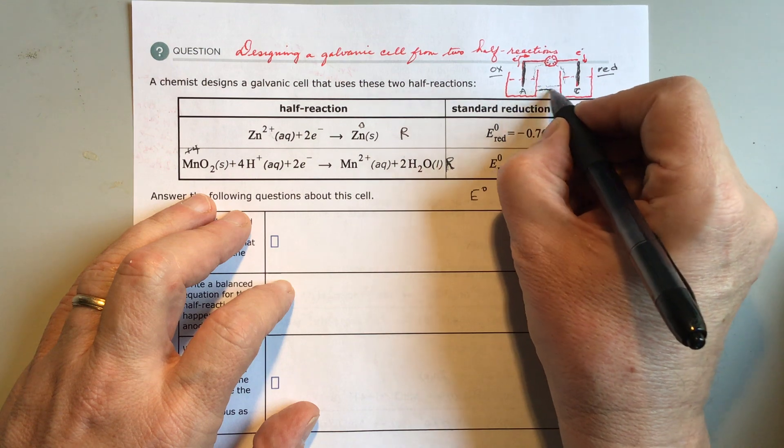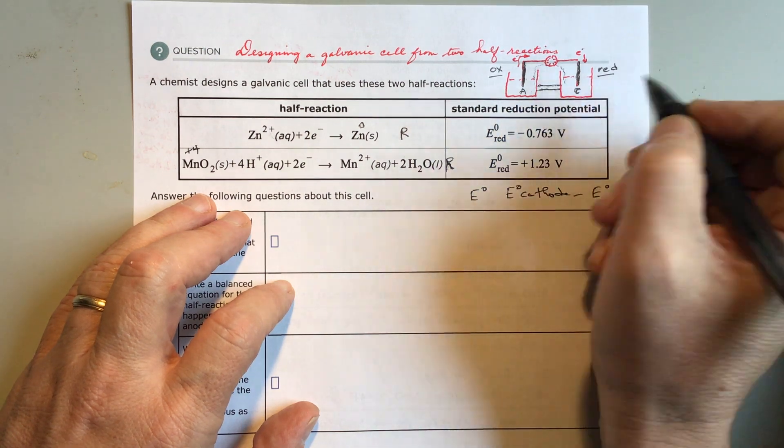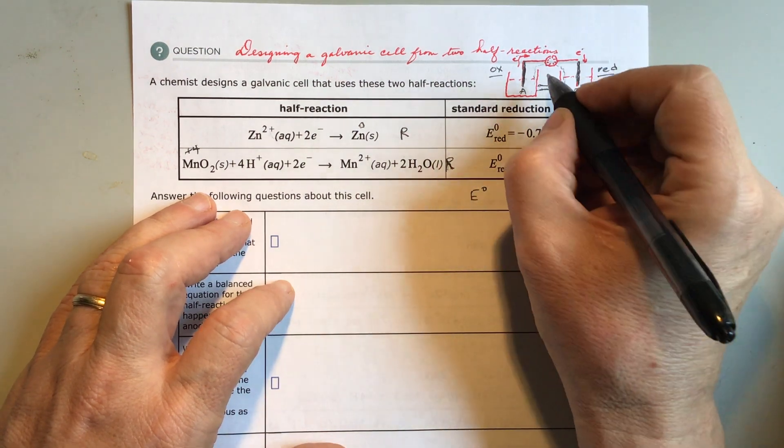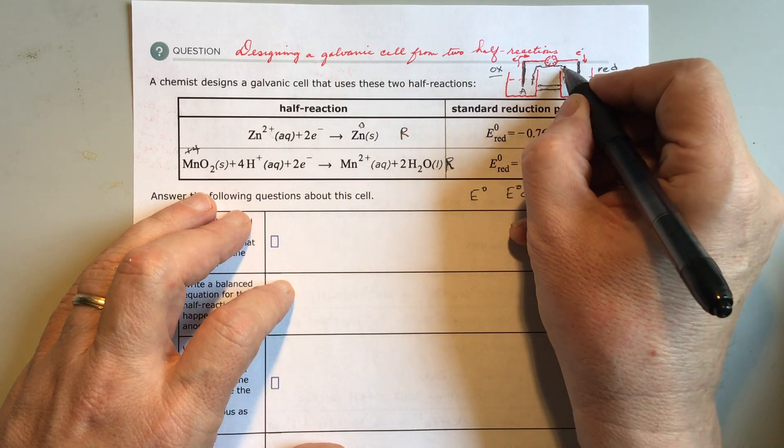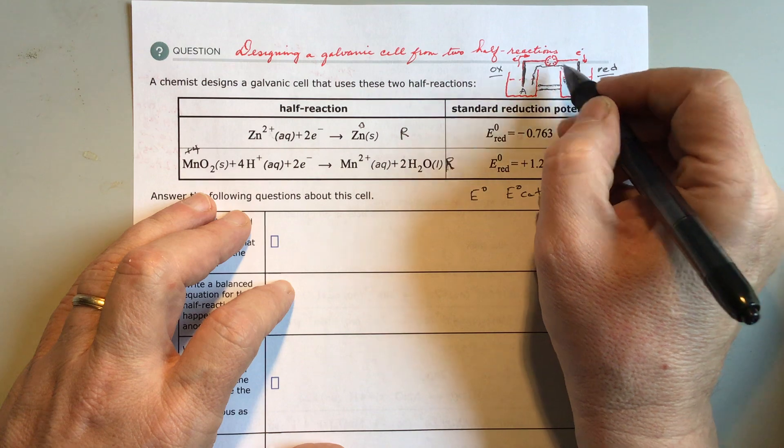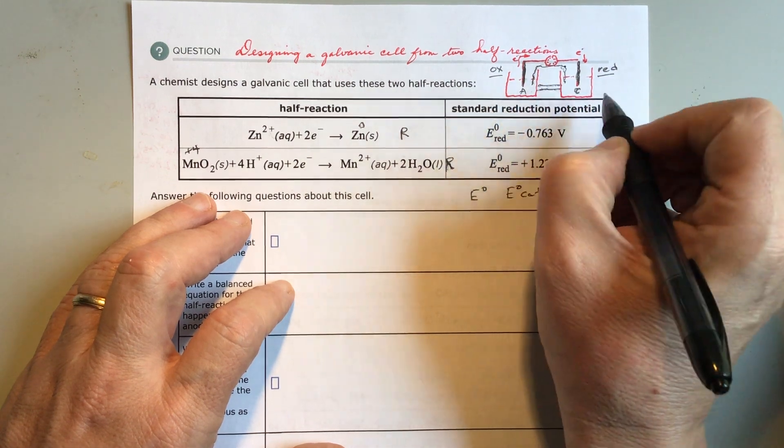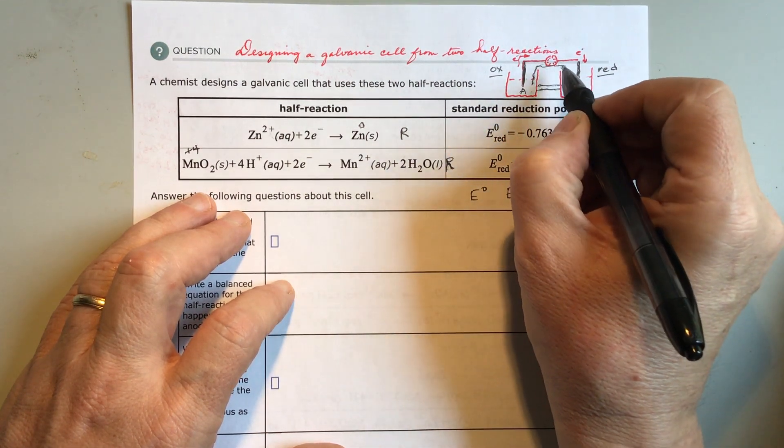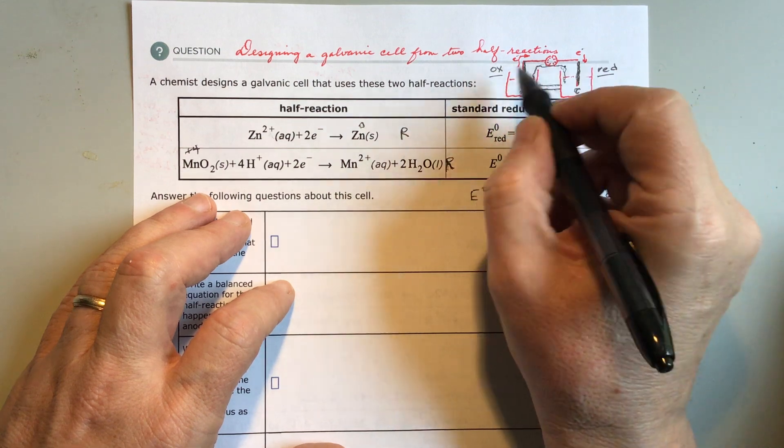You need some way back for the charge to go through, so you have to have either some kind of salt bridge that connects the jars, or some kind of something across that's wet, like even a wet piece of paper towel that has some salt on it so that the charge can travel back and forth and you can get a circuit.